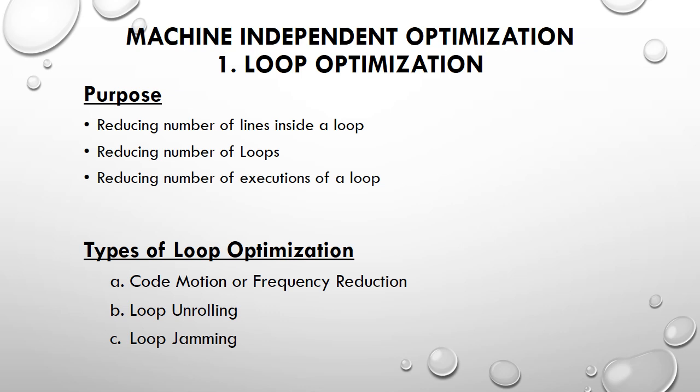The second goal is reducing the number of loops. If we have four loops and reduce them to two or three, that is a significant improvement. The third goal is reducing the number of executions of a loop — if a loop runs 1000 times and we reduce it to 500, that is a great improvement. This is the essence of loop optimization.